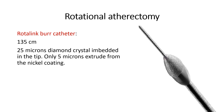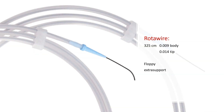Basically, the rota burr is a burr covered at its front face with diamond crystals that ablate calcified tissue when spinning at a speed of around 150,000 to 180,000 rounds per minute. The burr is advanced over a special stainless steel wire that is 325 cm long, with a body of 0.009 inch and a tip of 0.014 inch. There are two types — the most commonly used is the floppy one; the extra support wire is usually reserved for ostial lesions. The wire is difficult to steer, so a microcatheter may be needed to cross the lesion with an ordinary wire and then exchange for the rota wire.